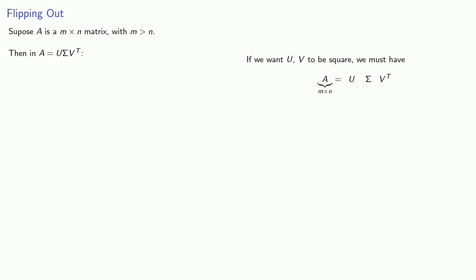A, an m by n matrix, must be the product of an m by m matrix U, an m by n matrix Σ, and an n by n matrix V^T.